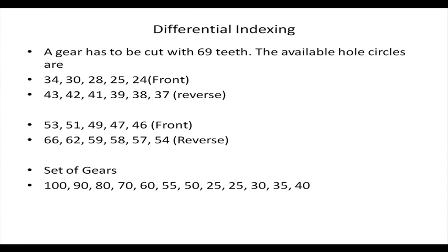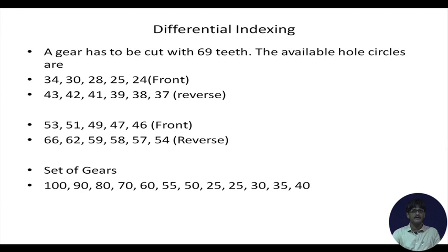The first question concerns differential indexing. A gear has to be cut with 69 teeth. The available hole circles are some hole circles present on the index plate, and the set of gears which are available includes 100, 90, 80, etc. The highest value is 66. These change gears are used to set up a gear box between the worm gear and the index plate, as is generally the case in differential indexing. This is the statement of the problem.